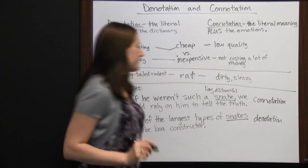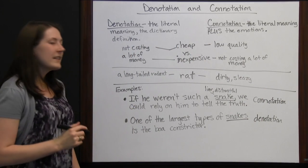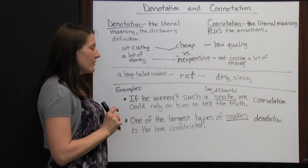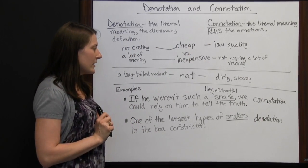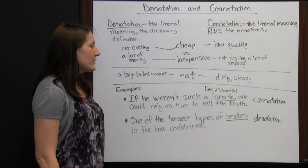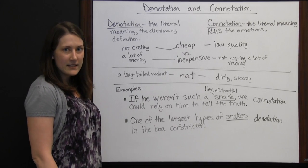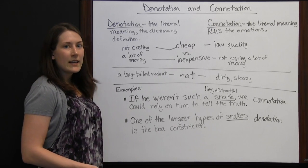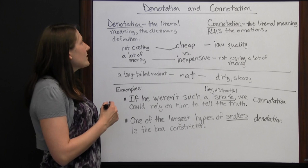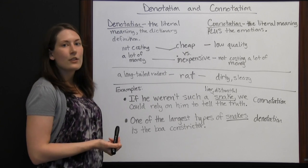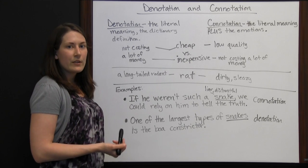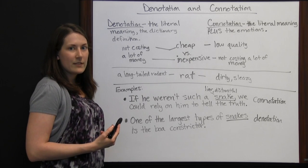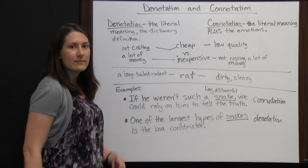You can see that understanding whether a word is using connotation or denotation is going to help you understand what the sentence is about. When you are reading, understanding if you're looking at the denotation or connotation of words can make a world of difference to that sentence's meaning.